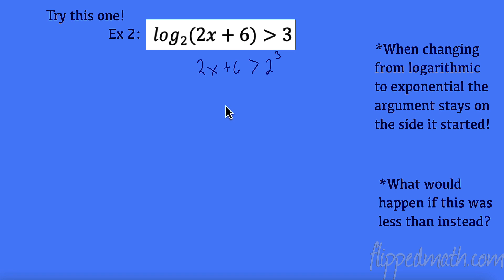All right? But was that the first thing I should have done? No, no, no. I need to check my restrictions. So this has to be greater than 0, my argument has to be greater than 0. So 2x has to be greater than negative 6. x has to be greater than negative 3. We'll come back to that in a minute.